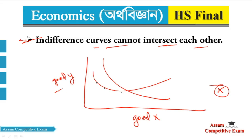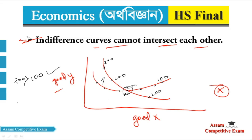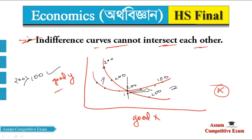Suppose on one indifference curve each point gives 100 units of satisfaction. And on another indifference curve above it, each point gives 200 units of satisfaction. If two curves intersect at a point, that point would have to give both 100 and 200 simultaneously — which means 200 equals 100, which is impossible.